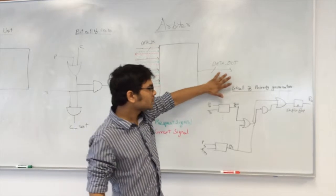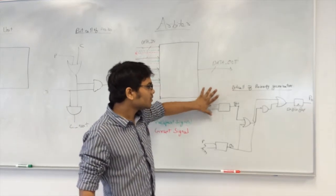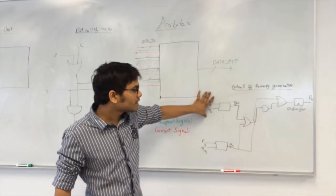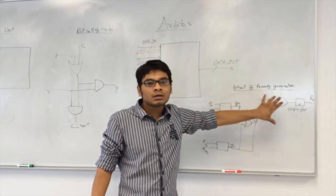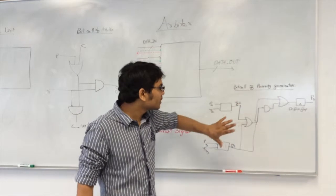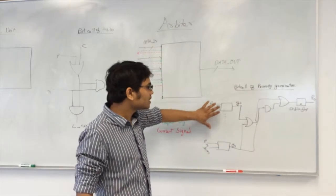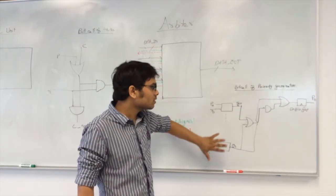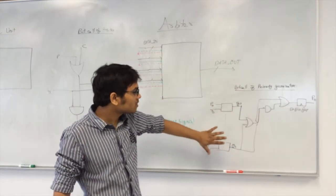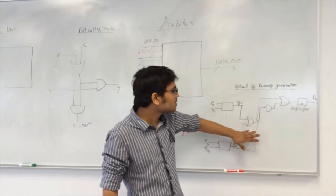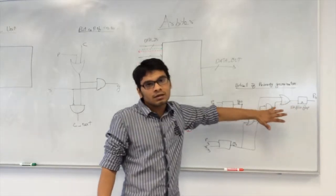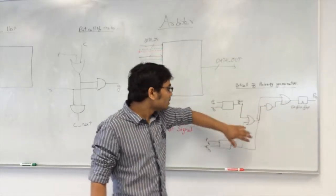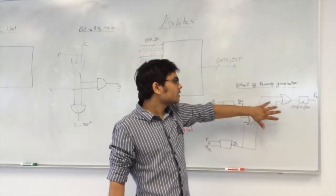Here we can see the single block of the priority generator, which generates the priority depending on the grant signals given in the previous clock cycle by using some logic gates like the AND and NAND gates.